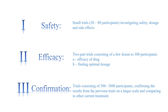Phase 3 trials consist of 300 to 3,000 participants and is used for confirming the results from the previous two trials on a larger scale. The data collected is also very useful when comparing the drug candidate to other current treatment options.